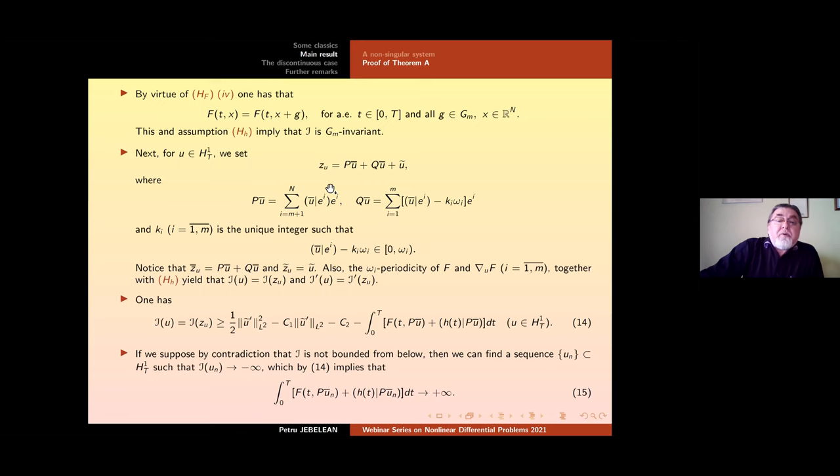Namely precisely I(u) = I(Z_u) and I'(u) = I'(Z_u). It remains hidden for our function. Now we have to estimate I(u) by this inequality here.